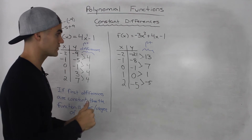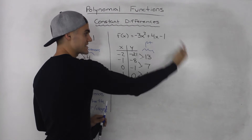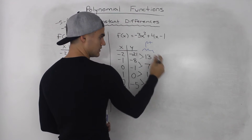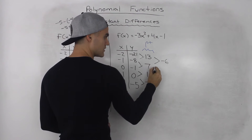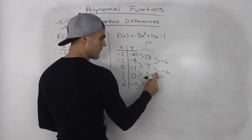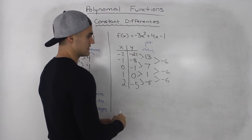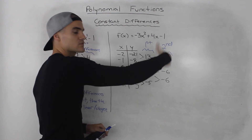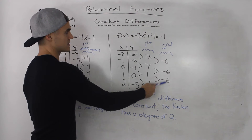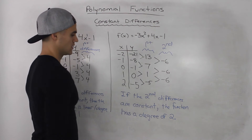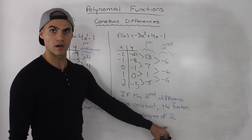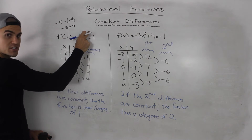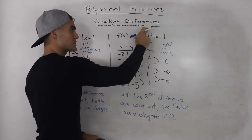This column is our first differences, and notice they're not constant as in the previous example. When differences aren't constant, we take the differences of that column to find the second differences. Taking bottom minus top: 7 minus 13 gives negative 6; 1 minus 7 gives negative 6; negative 5 minus 1 gives negative 6. The second differences are constant, and we're dealing with a function of degree 2. The first differences were constant for degree 1, and the second differences are constant for degree 2.